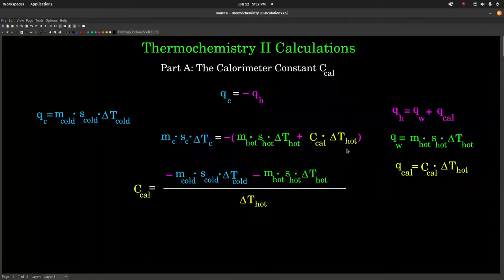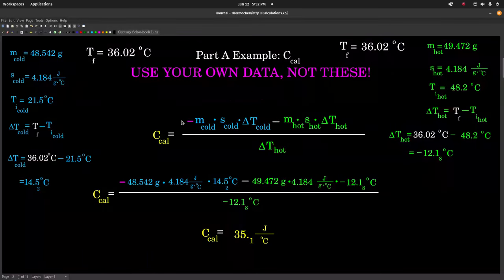If we rearrange this equation, we can solve it for the calorimeter constant, Ccal. From our experiment, we know everything else — we collected enough data to give us all the other information. I'm going to put some numbers in here so you can see where everything goes and what it looks like in the actual calculation. But again, these are not your numbers; these are mine. Use yours.